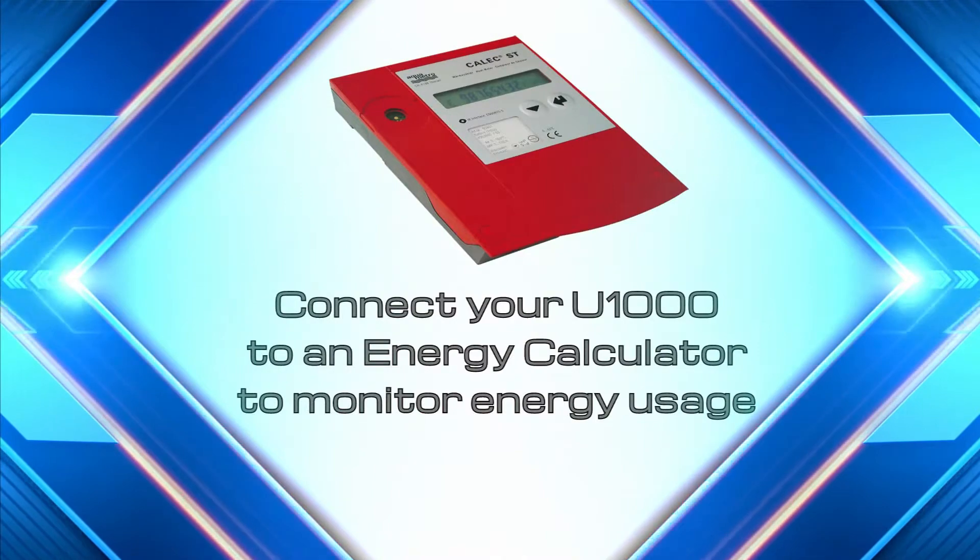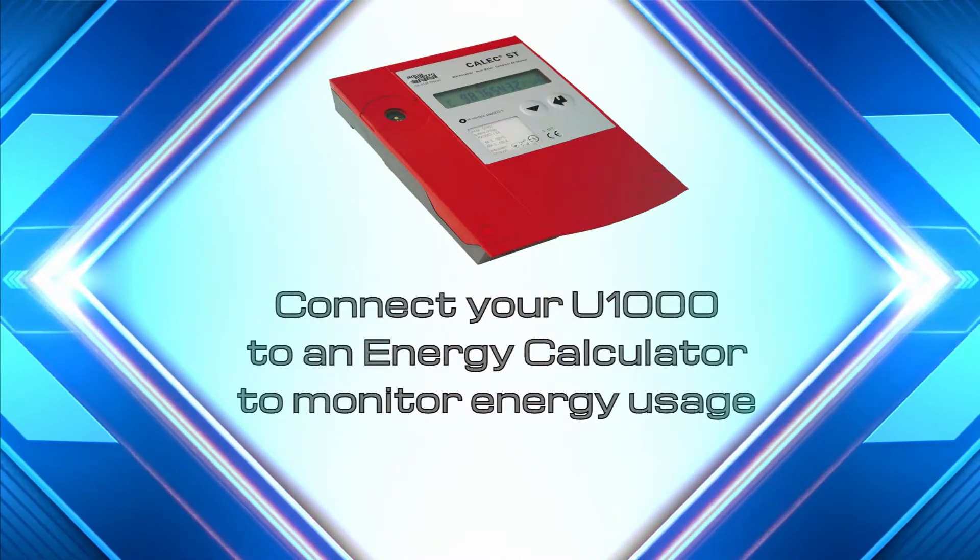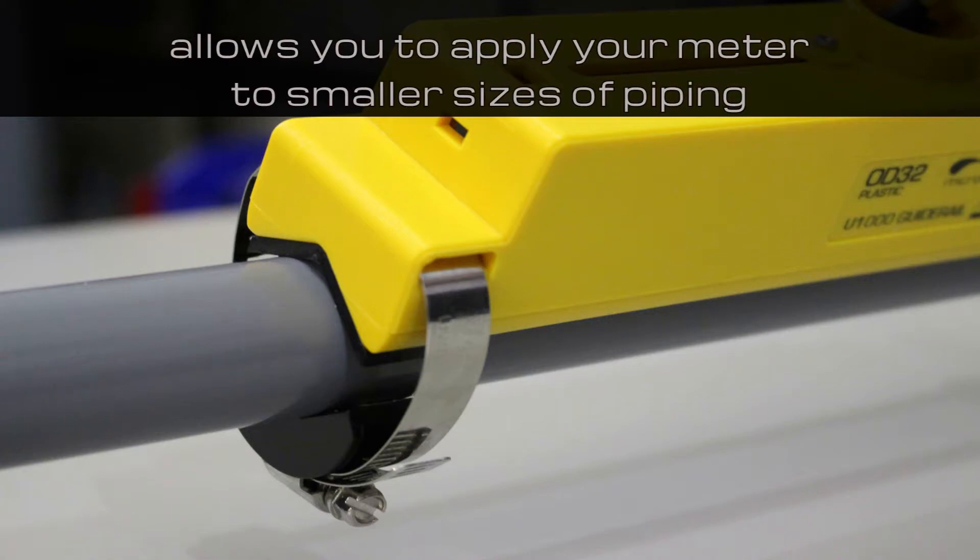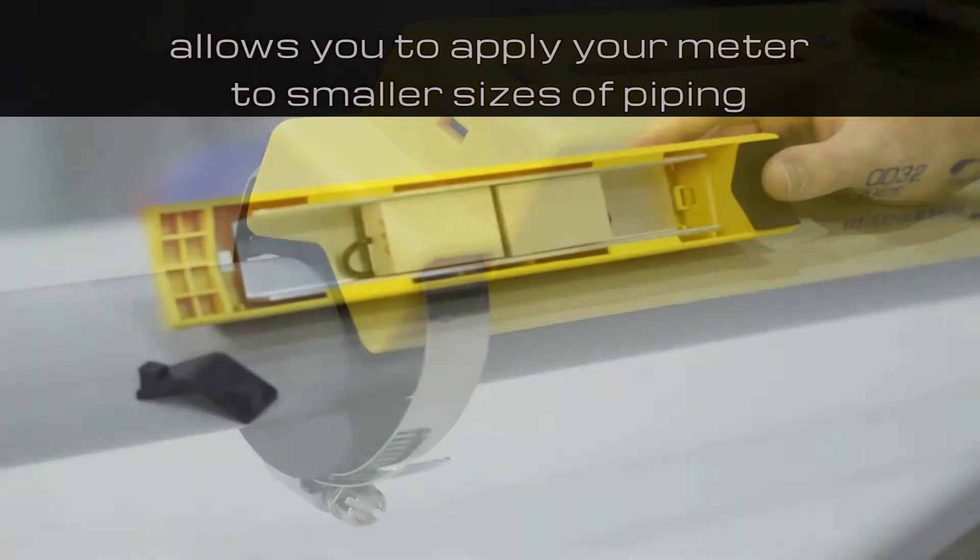You can also connect this meter to an energy calculator to monitor energy usage. This easy to use adapter for the U1000 series ultrasonic clamp-on flow meter from Micronix allows you to apply your meter to smaller sizes of piping.